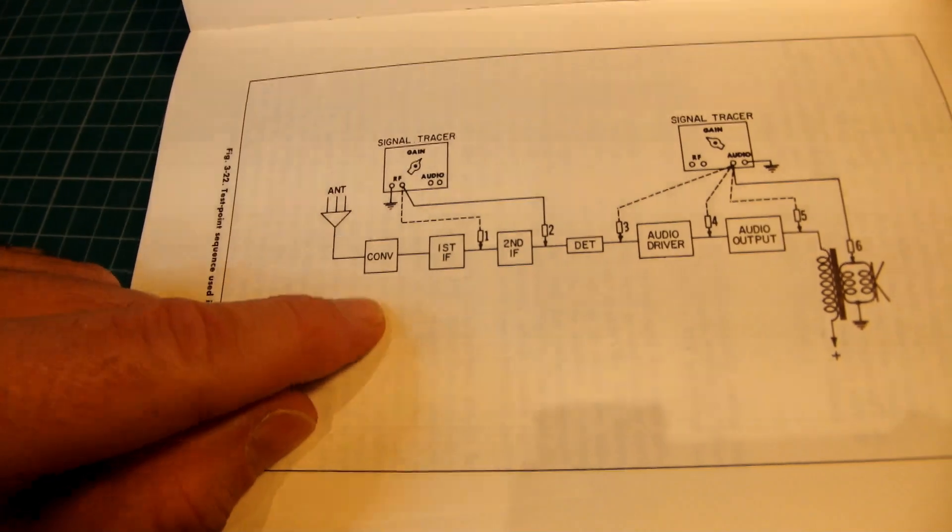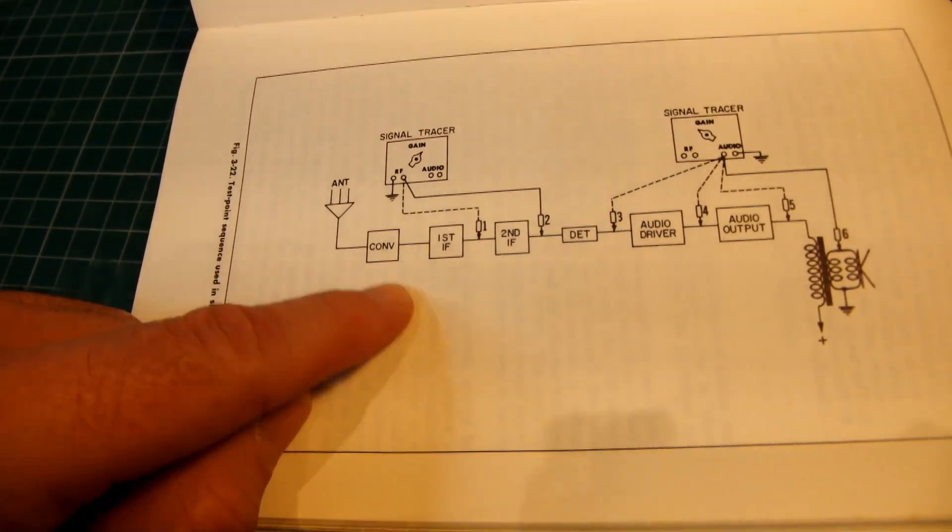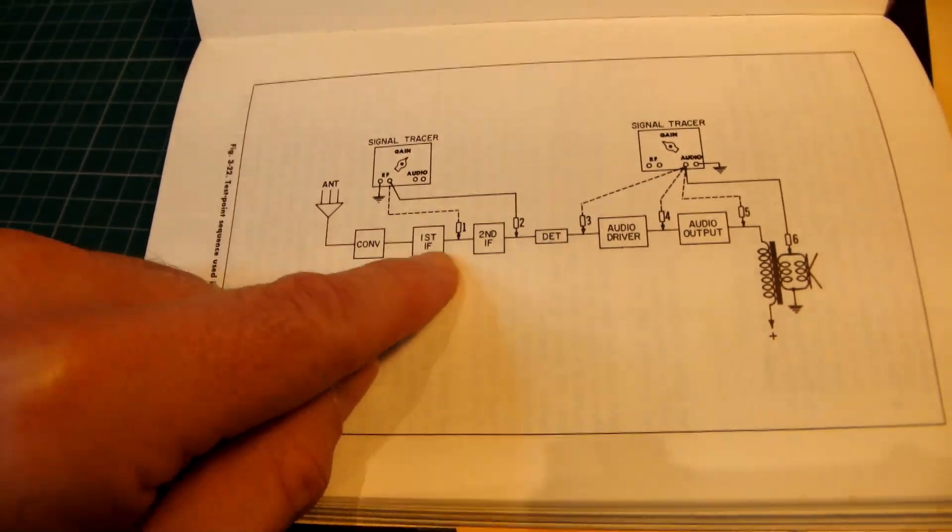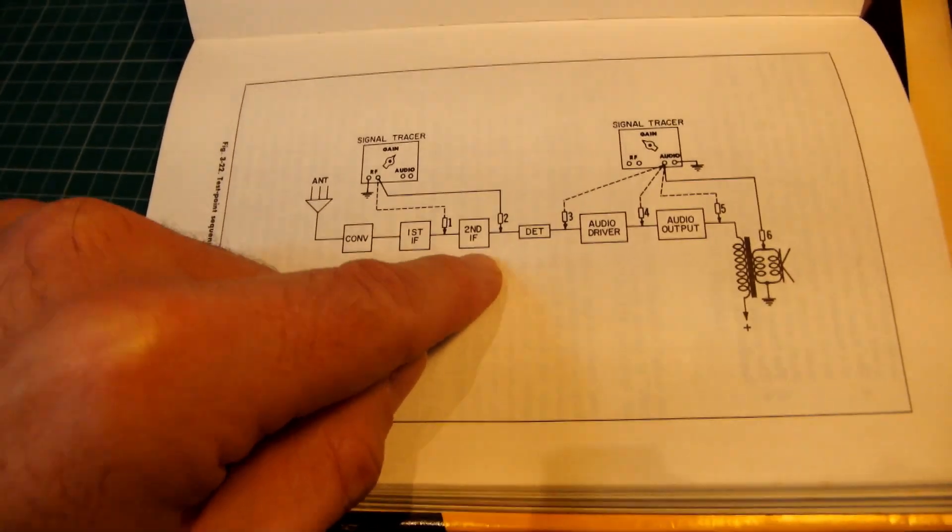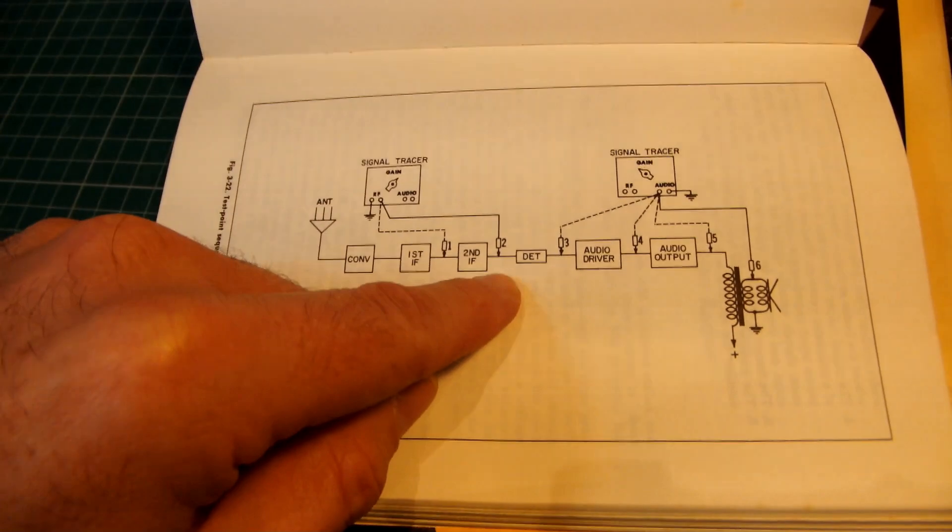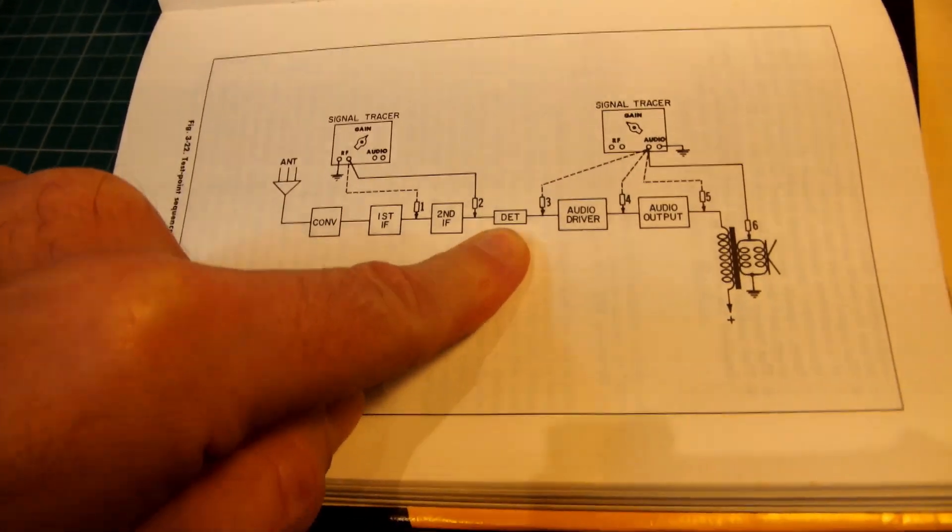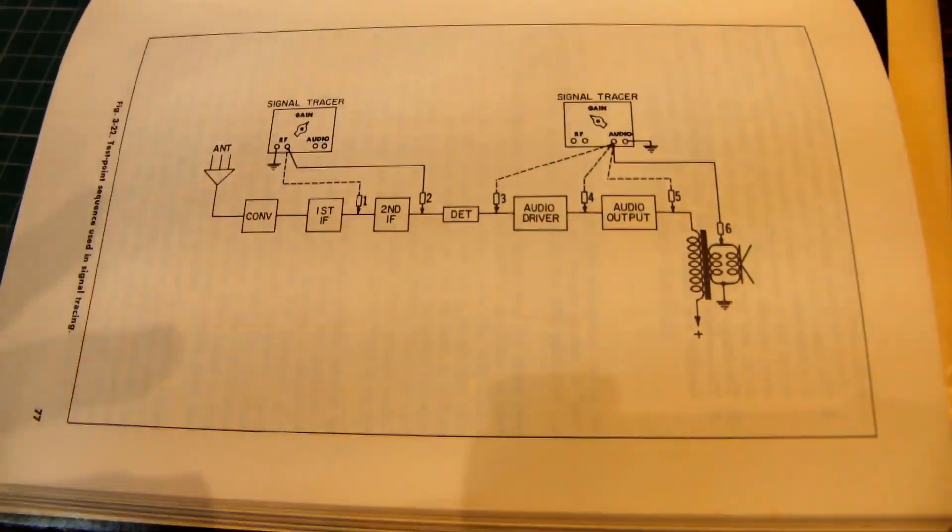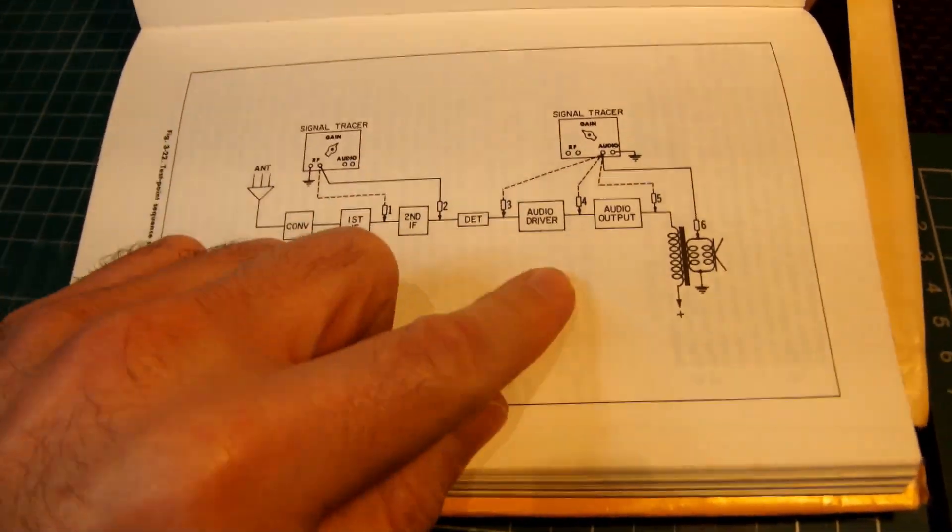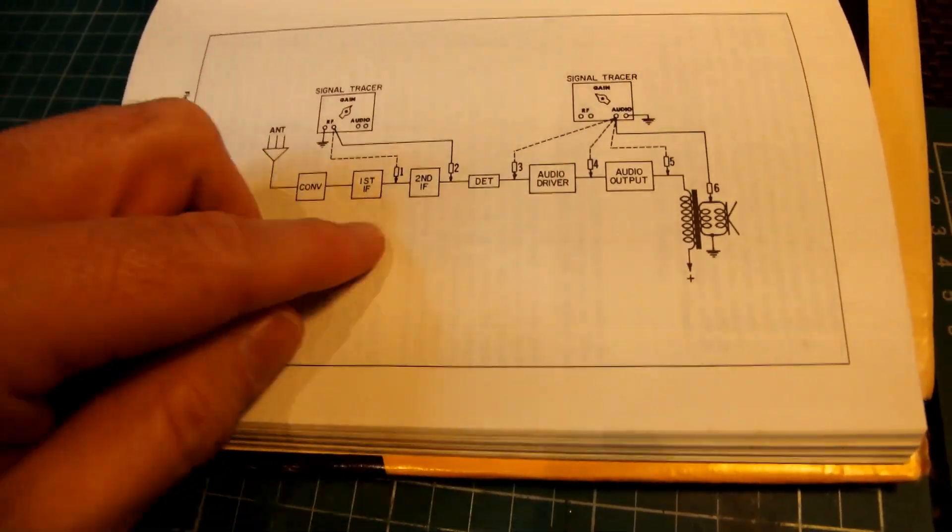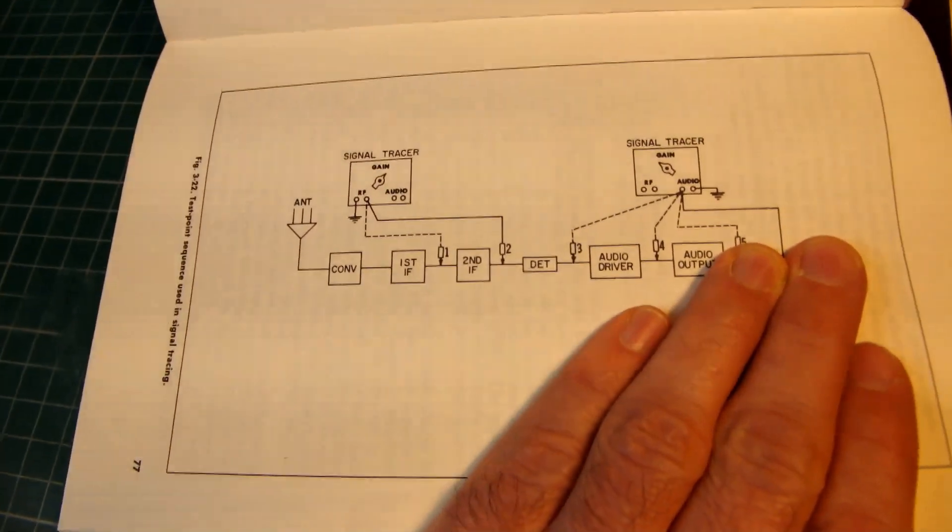In a radio, you have an antenna, then a converter that mixes a local oscillator, then intermediate frequencies to get the RF frequency to a known frequency that you can work with and filter out. Then you detect the audio and amplify it out to the speaker. If anything breaks along that chain and you don't hear anything in the speaker, you're trying to figure out where the fault is.